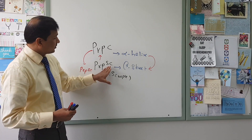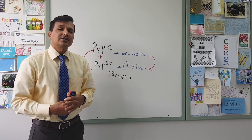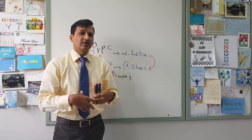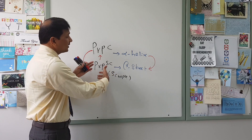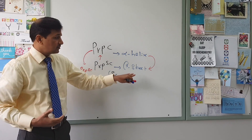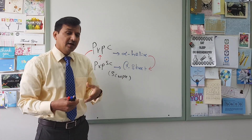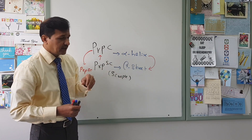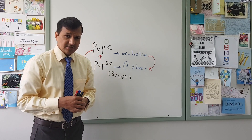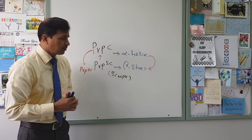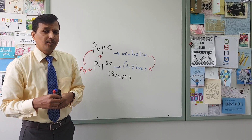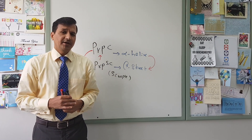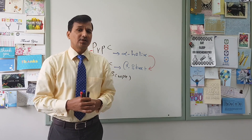Note why PrPSc accumulation is so pathological for our body: the abnormal PrPSc, which is rich in beta sheet, is resistant to degradation by proteases. Proteases are enzymes that degrade proteins. The proteases won't be able to degrade PrPSc because of the excess beta sheets. Normally beta sheets are resistant to degradation, whereas normal cellular PrPC, which is rich in alpha helix, can be degraded by proteases. This is why there will be accumulation of more and more PrPSc, making amyloid plaque formation. In prion disease there will be amyloid plaques accumulated in the extracellular matrix, which will initiate the pathogenesis process.